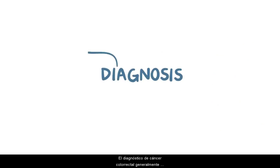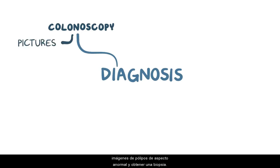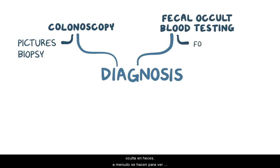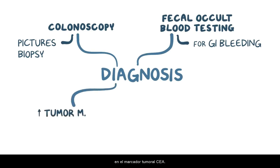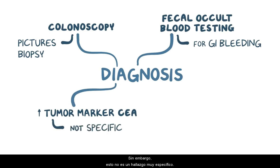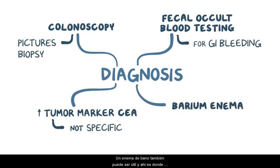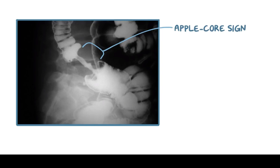Diagnosis of colorectal cancer typically requires colonoscopy, which is when a camera is inserted retrograde into the colon and rectum to take pictures of abnormal-looking polyps and get a biopsy. In addition, fecal occult blood testing is often done to look for evidence of gastrointestinal bleeding. Typically in colorectal cancer there is an elevation in the tumor marker CEA, which is a glycoprotein involved in cell adhesion, though this is not a very specific finding. A barium enema can also be useful, where a liquid is injected into the rectum and an x-ray is taken. A classic sign on barium enema is the apple core sign, which shows constriction of the lumen, most often in the descending colon.